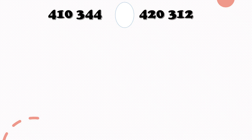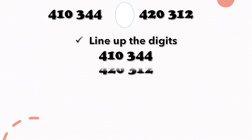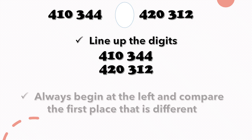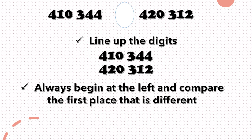Here is how to compare numbers: 410,344 and 420,312. Always line up the digits — here is how to line up your digits. Notice that each digit is in its correct place. Always begin at the left and compare the first place that is different.